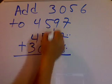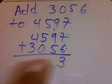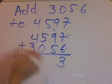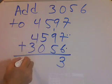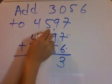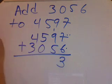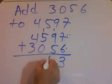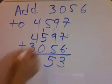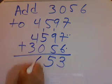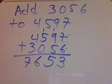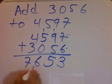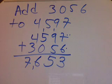This one is 4. If I add the 1 to the 9, it becomes 10, plus 5 gives me 15. This gives me 6, and this gives me 7. So my answer is 7,653. You can check it.